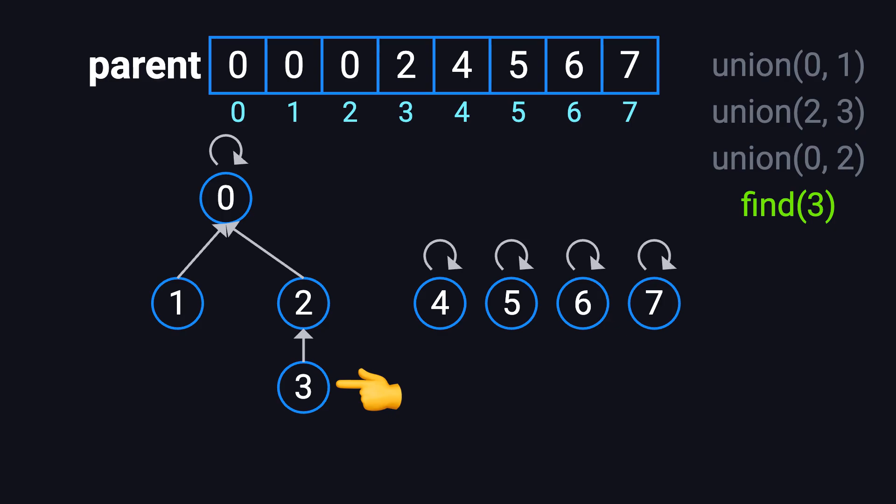At this point, if we call find(3), the system first checks that 3's parent is 2, then checks that 2's parent is 0. Since 0's parent is itself, we return 0. In other words, the representative of the group containing 3 is 0.